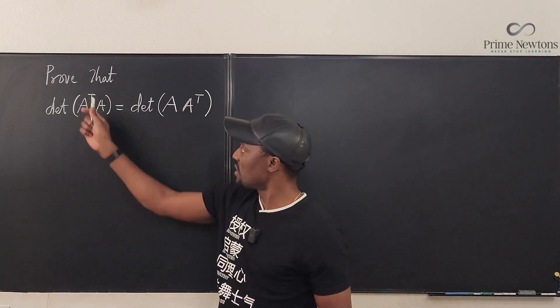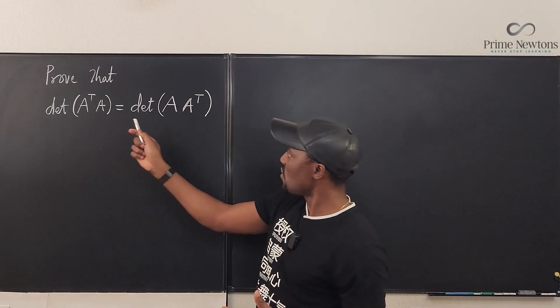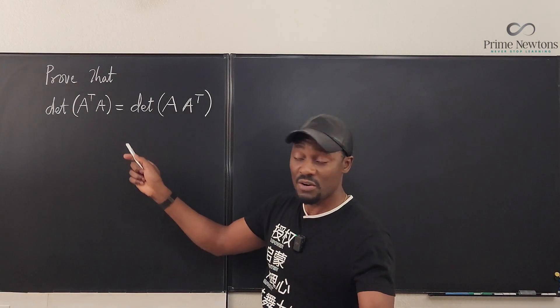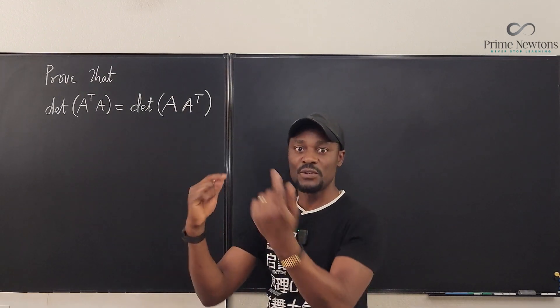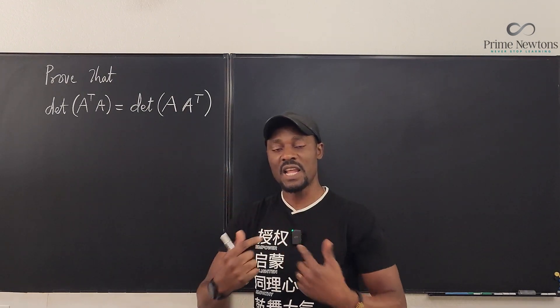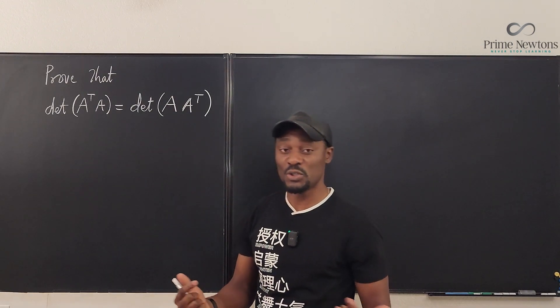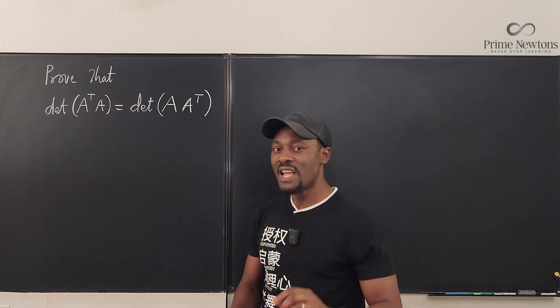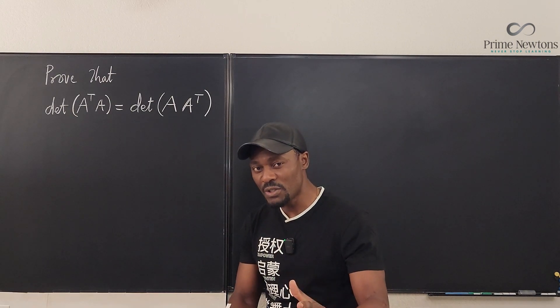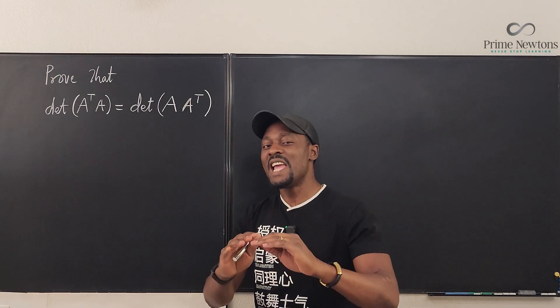But this says that if you multiply A transpose by A, you get the same determinant as if you switch the order to A times A transpose. We just want to prove that.